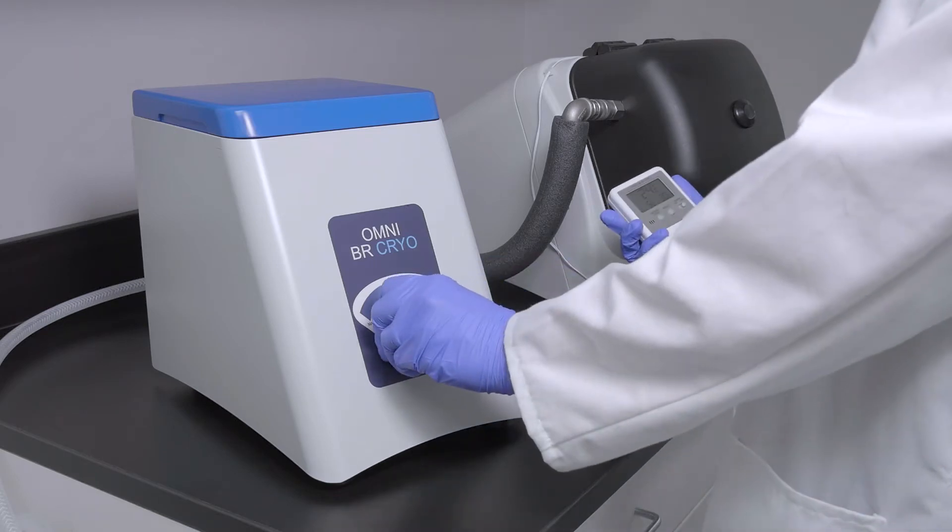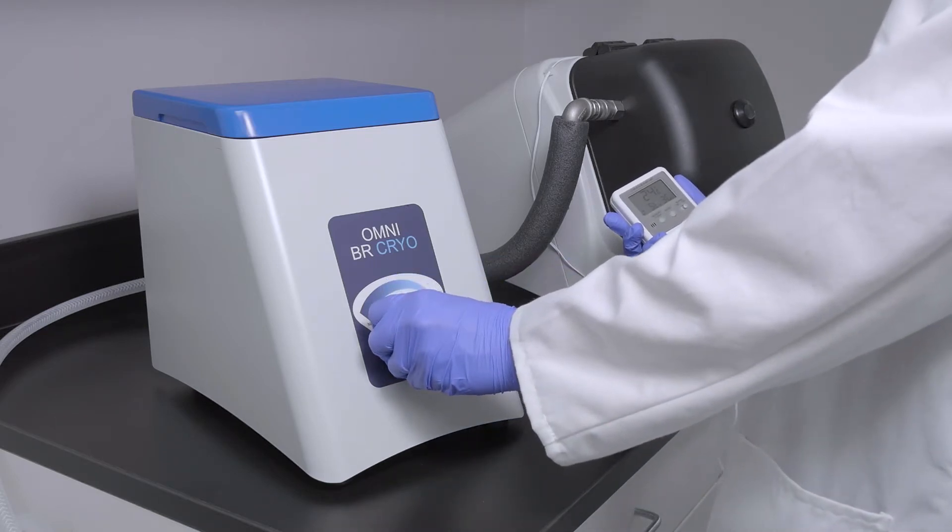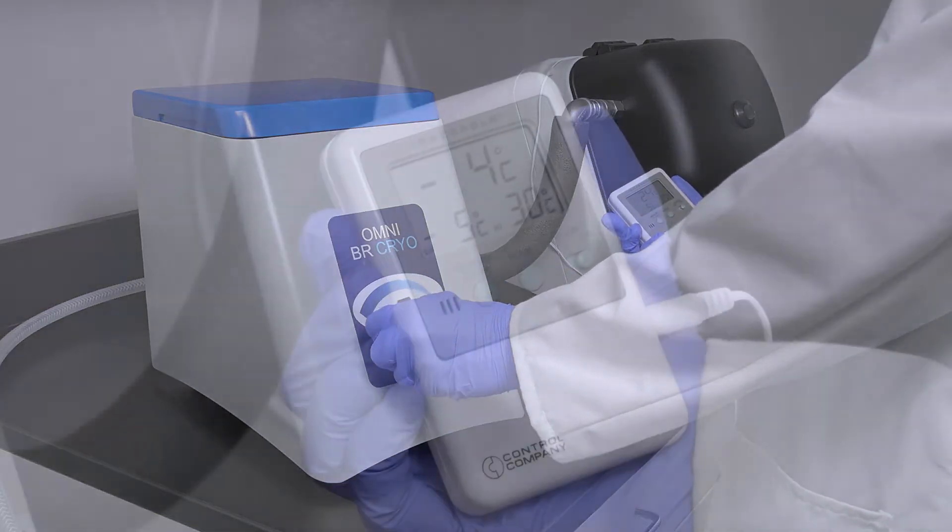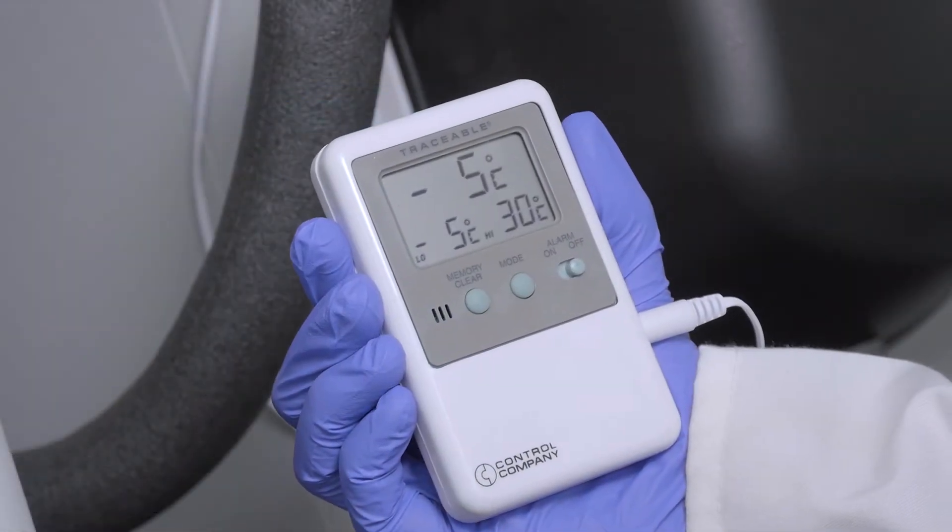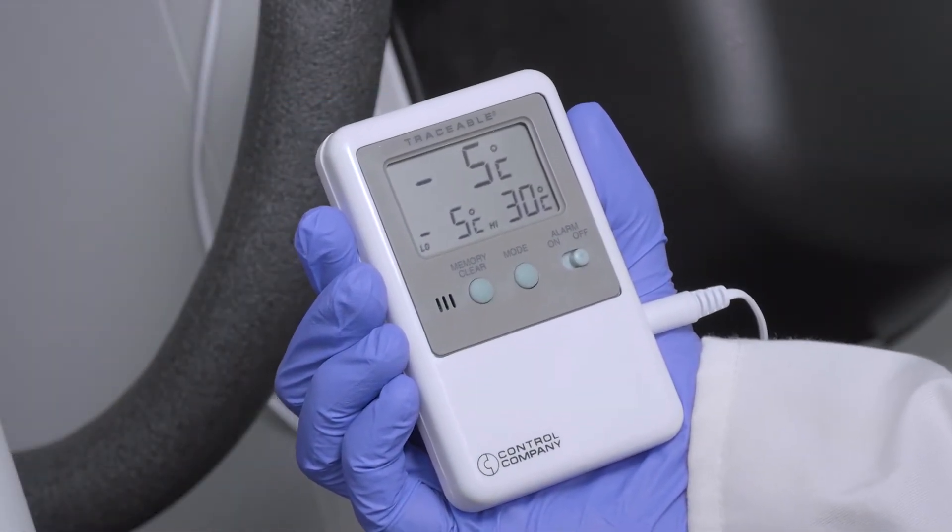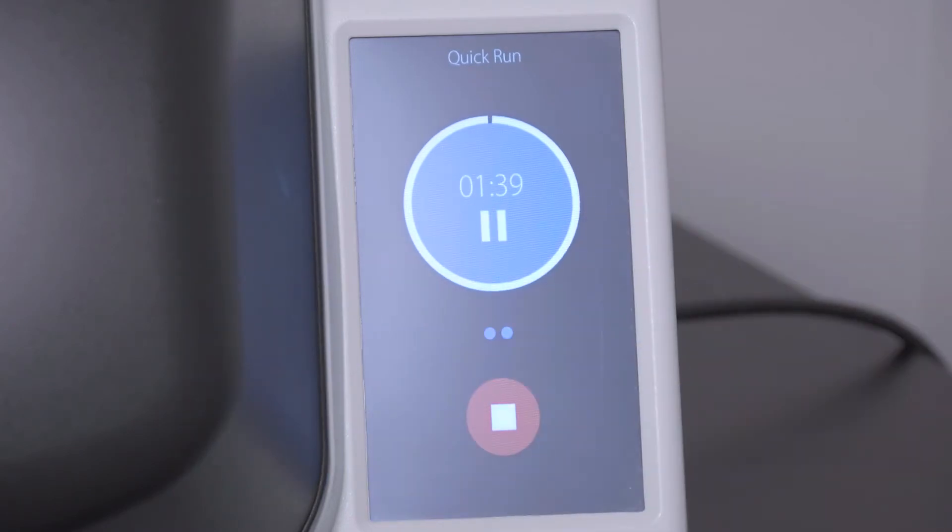Turn the control knob to begin cooling the processing chamber. When the temperature has reached negative 5 degrees Celsius, press ready to begin the processing cycle.